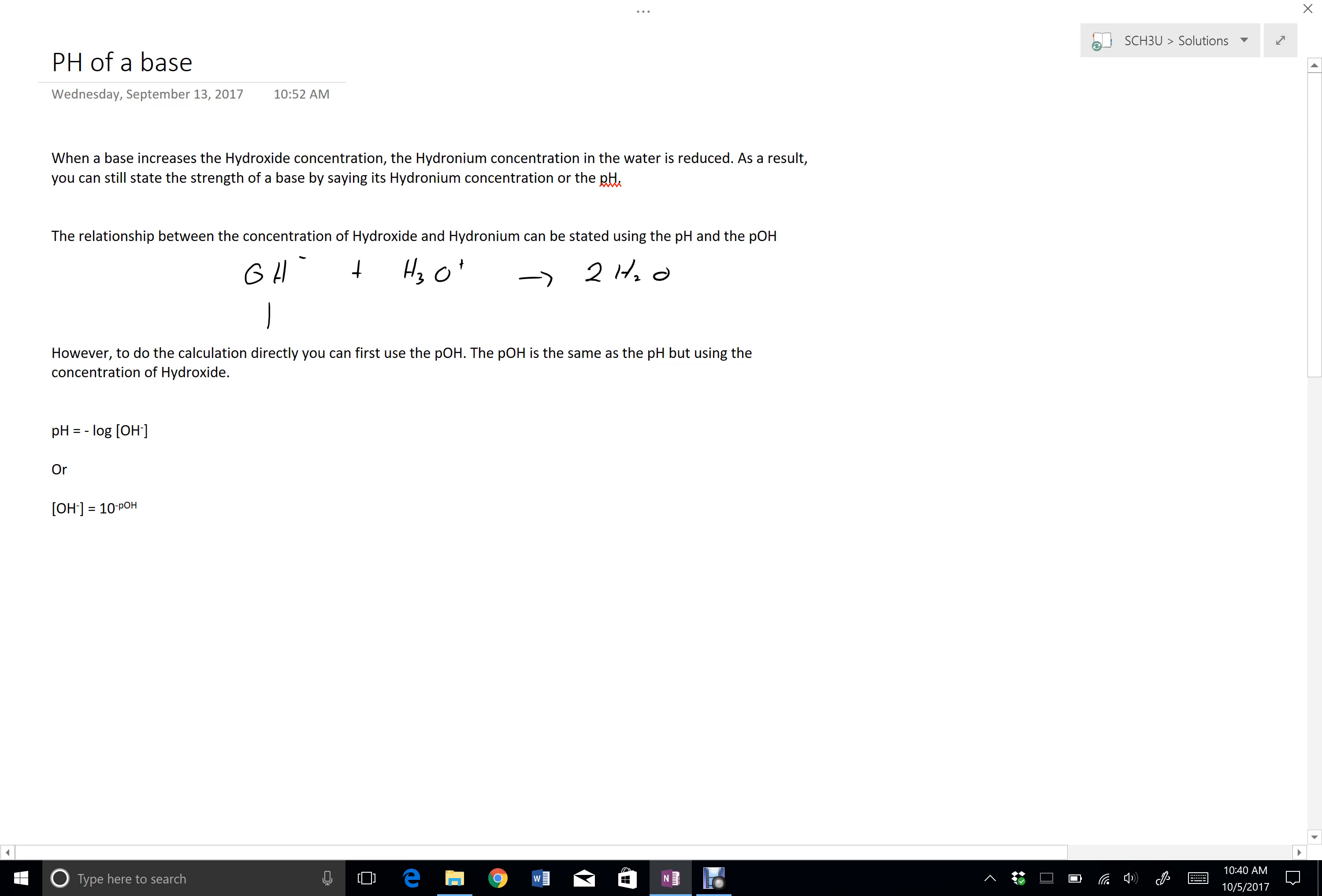So by adding hydroxide, I naturally reduce the population of hydronium in a solution. So we can still define how strong a base is based on pH because there's a definite relationship between how much hydroxide and hydronium there is.